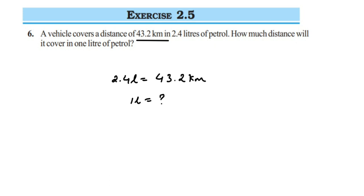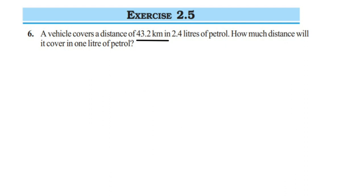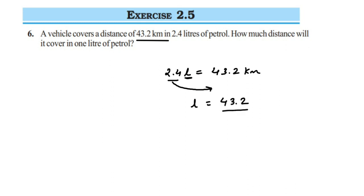For 2.4 liters it is covering 43.2 kilometers. We want to find for one liter of petrol how much distance it will cover. So bring the 2.4 to the other side — it will be 43.2 divided by 2.4. They have given for 2.4 liters of petrol it is 43.2 kilometers. For one liter, just transpose 2.4 to the other side. So one liter will be equal to 43.2 upon 2.4. If you divide this, we'll get for one liter of petrol how much distance is covered.